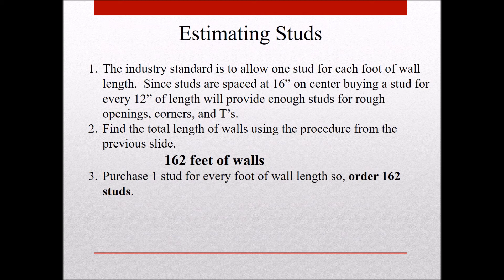The next step is estimating how many studs we need. The industry standard allows one stud per foot of wall length. Even though studs are spaced at 16 inches on center, we purchase one stud per foot — this gives enough studs for corners, tees, cripple studs, trimmers, and all wall components. With 162 total feet of wall, we purchase 162 studs. You can use this same procedure on a large house or commercial building.